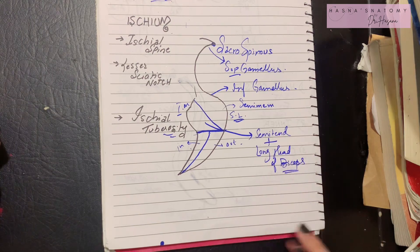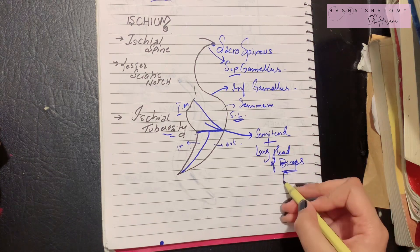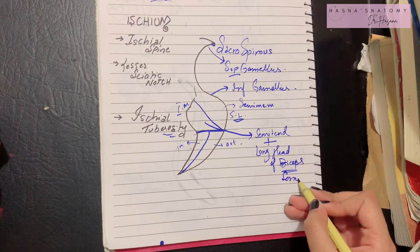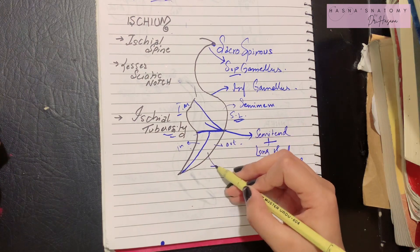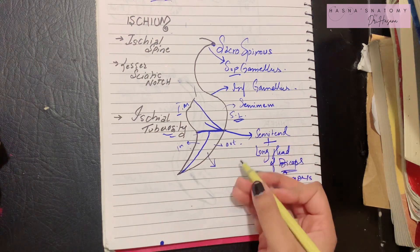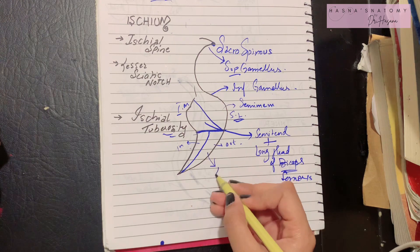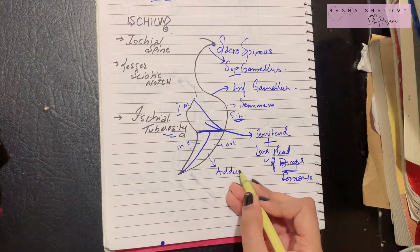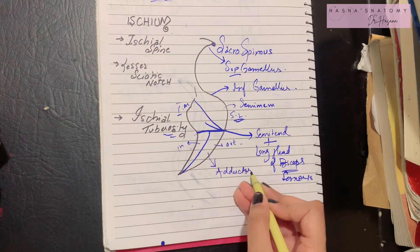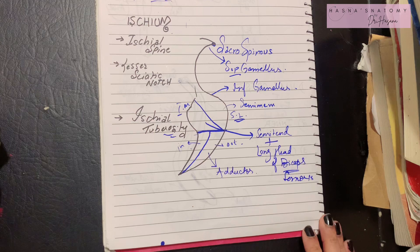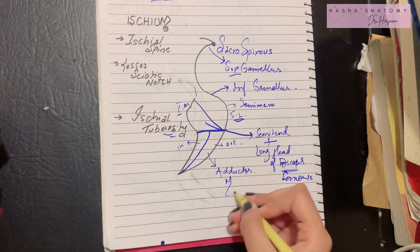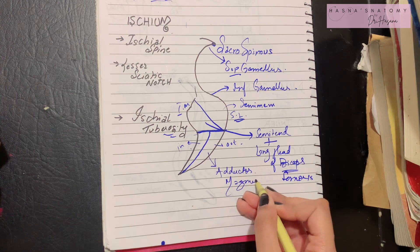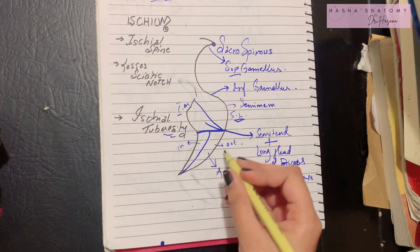The outer part of the ischial tuberosity gives attachment to the adductor magnus muscle. We've already studied the origin of adductor longus and brevis from the pubis, so the remaining adductor magnus arises from this outer lower part of the ischial tuberosity.